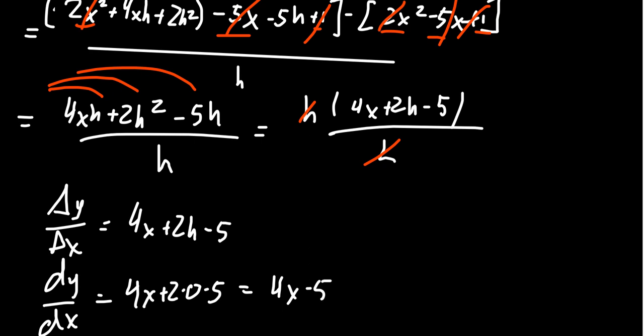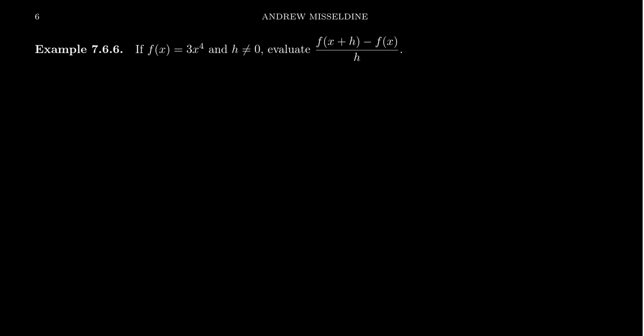Let's do another example. This time, let's consider f(x) to be 3x to the fourth. And we want to evaluate the difference quotient. So in that situation, delta y over delta x is going to look like 3 times (x+h)⁴ minus 3x⁴ all over h.